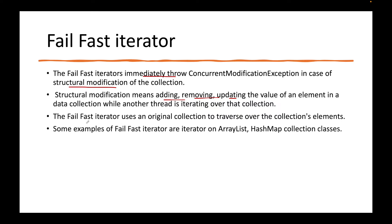Why does it happen? Because the fail-fast iterator uses the original collection. So whatever collection you have, you are traversing over that same collection, and if you modify it, it will sense there is a change. It actually uses something called the mod count to track changes. The examples where we can see fail-fast iterators — the most common are ArrayList and HashMap. You will see TreeMap as well.